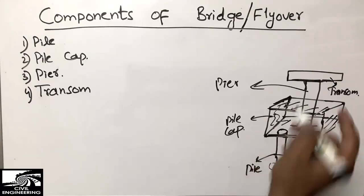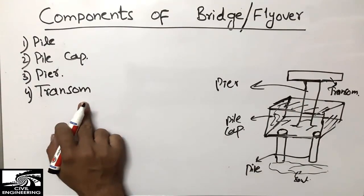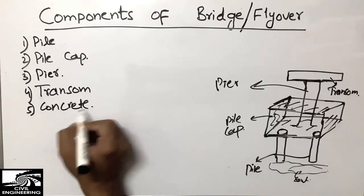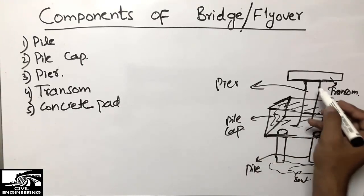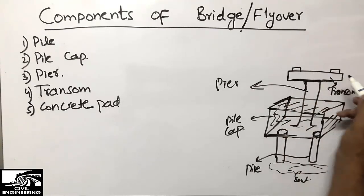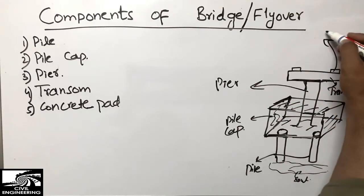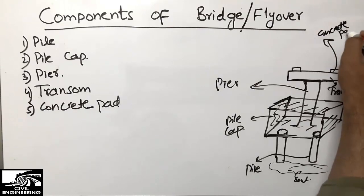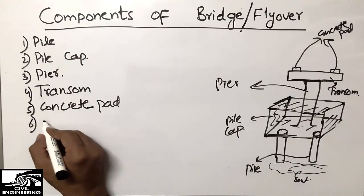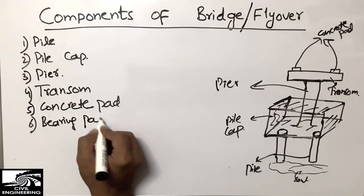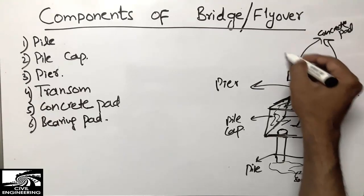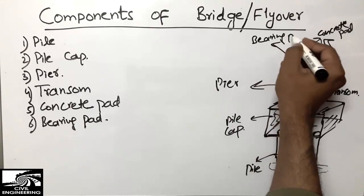After the transom, there is another important part called the concrete pad. We make it as a small-dimension box. After the concrete pad, we place the bearing pad — a small box similarly placed above the concrete pad. It is very important to place the bearing pad correctly, as the girder will be placed on top of it.